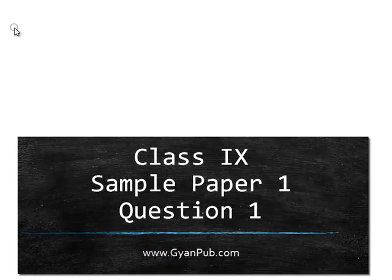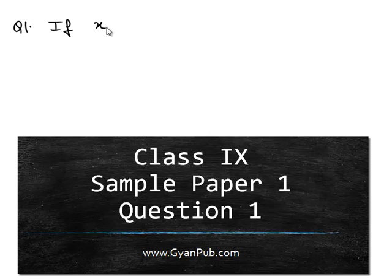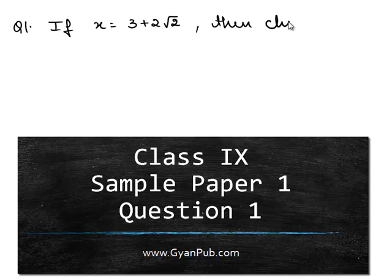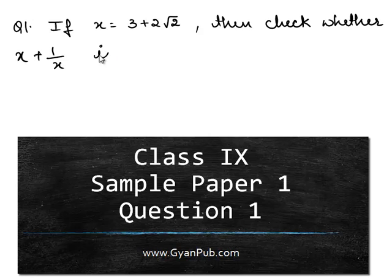Let us move on to the first question. If x is equal to 3 plus 2 root 2, then check whether x plus 1 by x is rational or irrational.